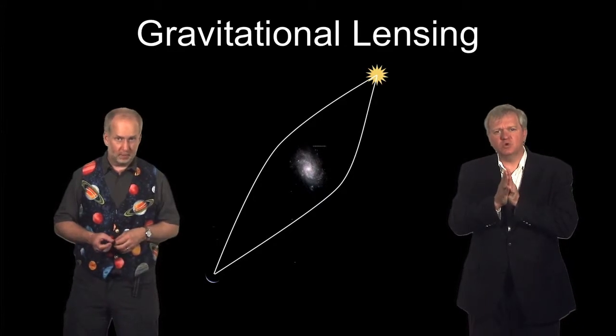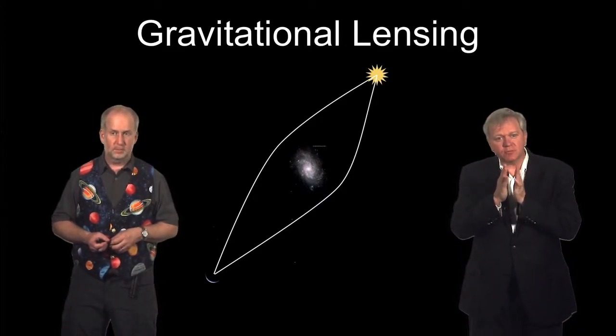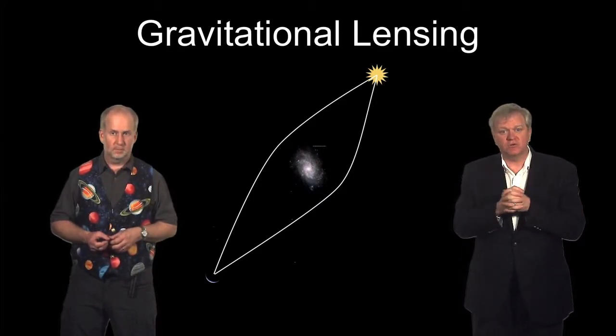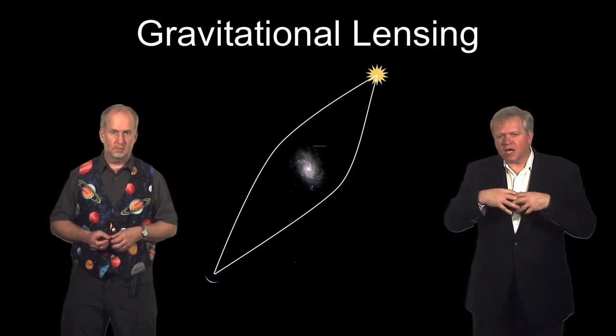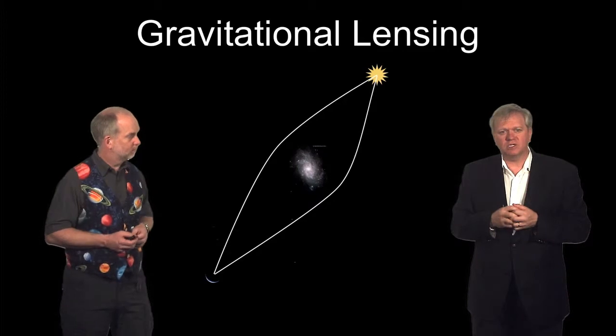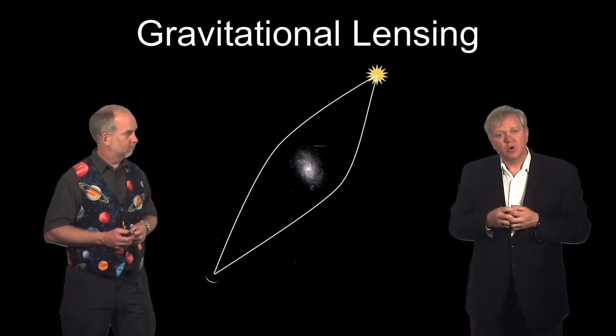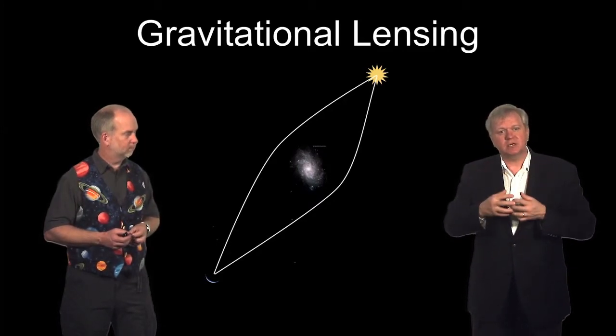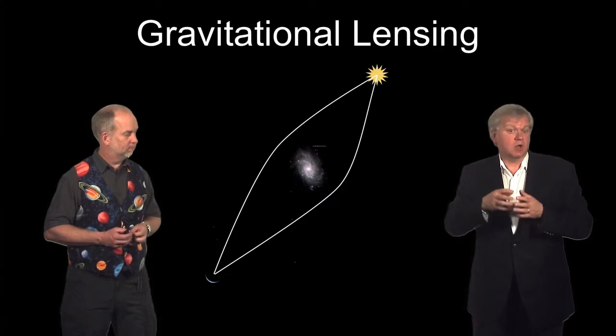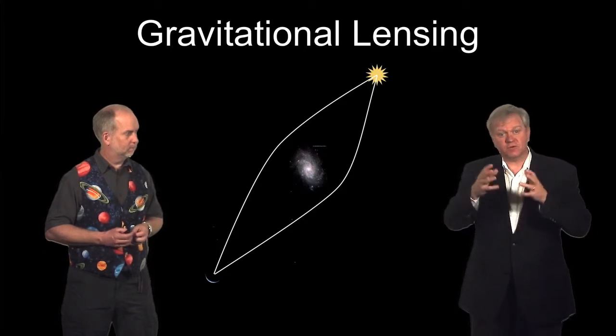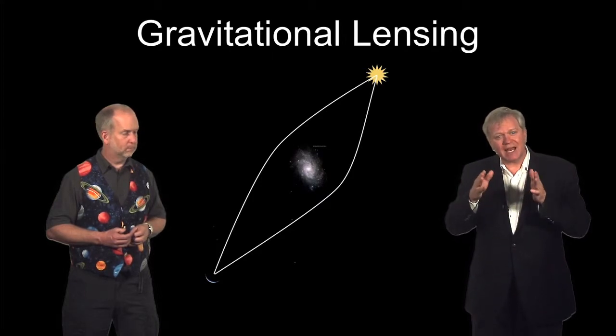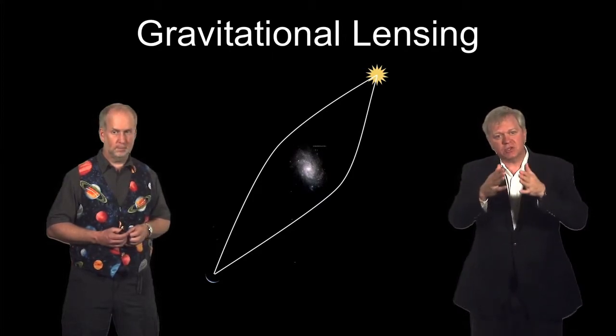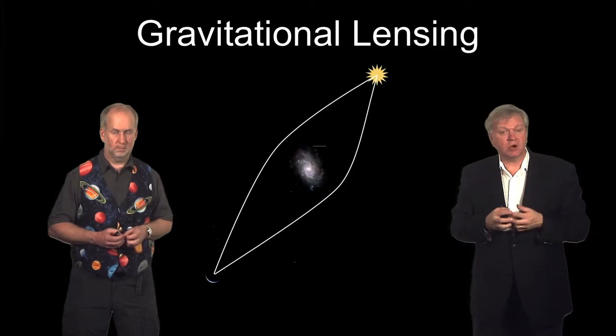So let's go through and use something that Einstein predicts for massive things in the universe, which is gravitational lensing. When Einstein proposed his theory of general relativity, one of the things it predicted was that space would be bent by gravity. And this is the way that Eddington first showed that general relativity seemed to be realized in nature, was looking at how the sun bent the light of background stars during an eclipse.